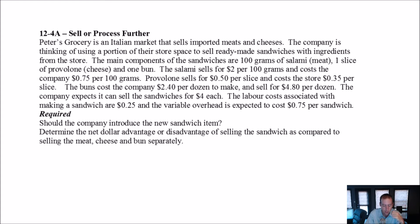So there's meat, cheese, and a bun. Pretty simple. The salami sells for $2 per 100 grams and costs the company 75 cents per 100 grams. The provolone sells for 50 cents per slice and costs the store 35 cents per slice. The buns cost the company $2.40 per dozen, that's for 12, and they sell them for $4.80 per dozen. The company expects that it can sell sandwiches for $4 each. The labor cost associated with making sandwiches is 25 cents, and the variable overhead is 75 cents per sandwich.